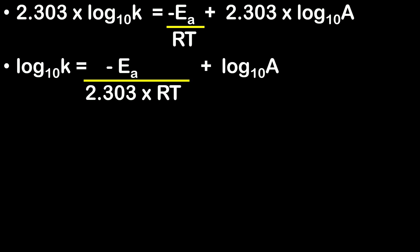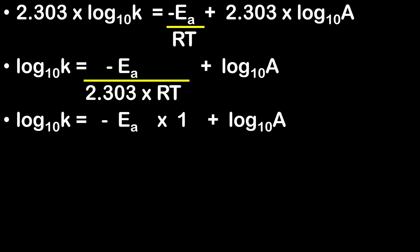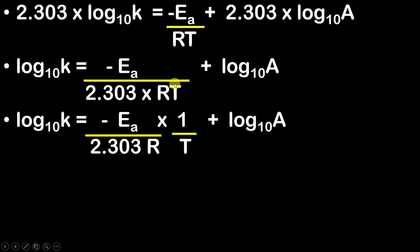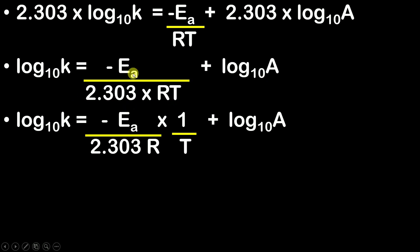Now we want the graphical representation of this equation. I will rewrite it in a slightly different manner by separating T, which is in the denominator. The reason I separate only T is that R is a constant, 2.303 is a constant, and E_A is also a constant — only T is the variable quantity.